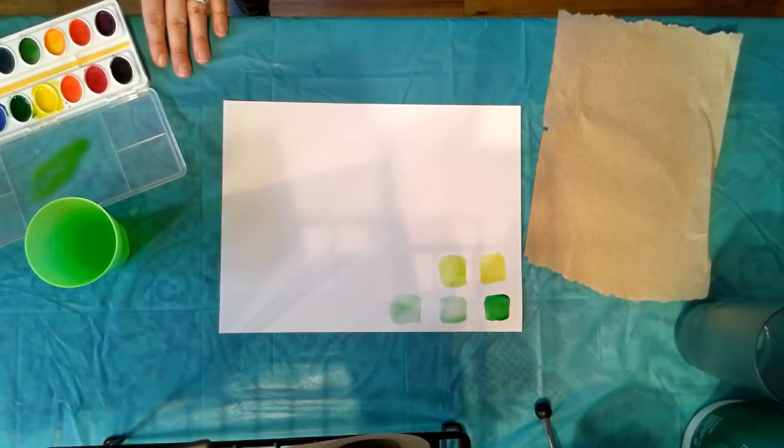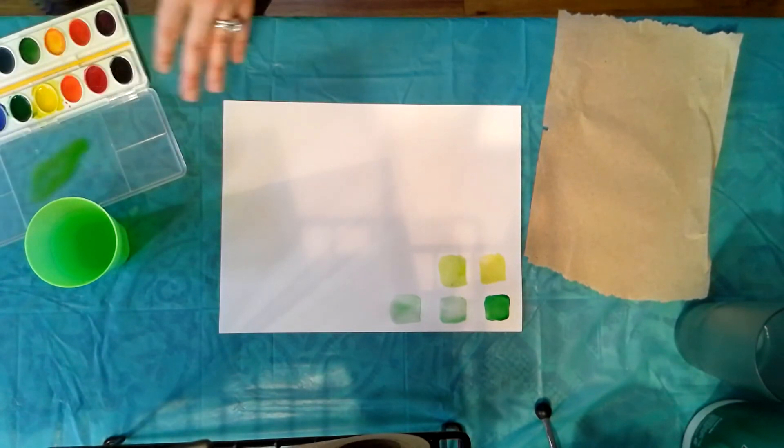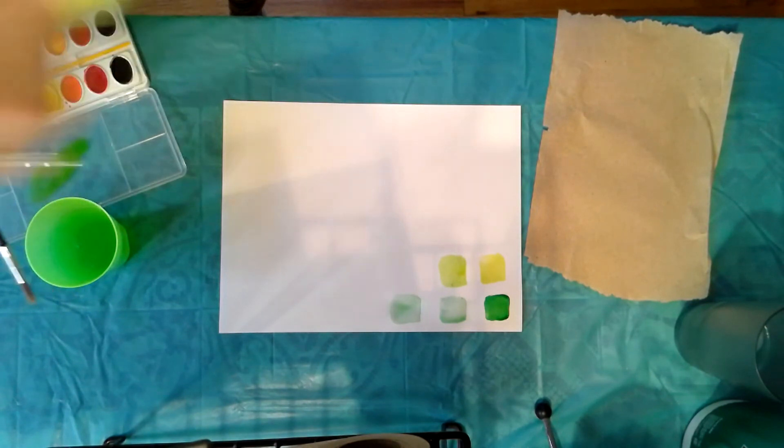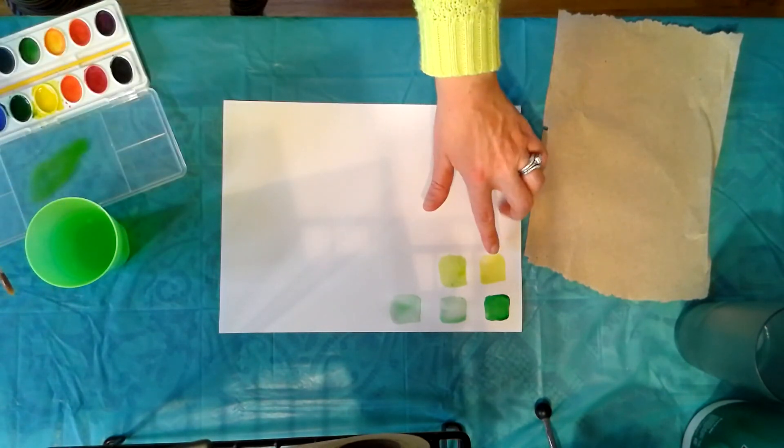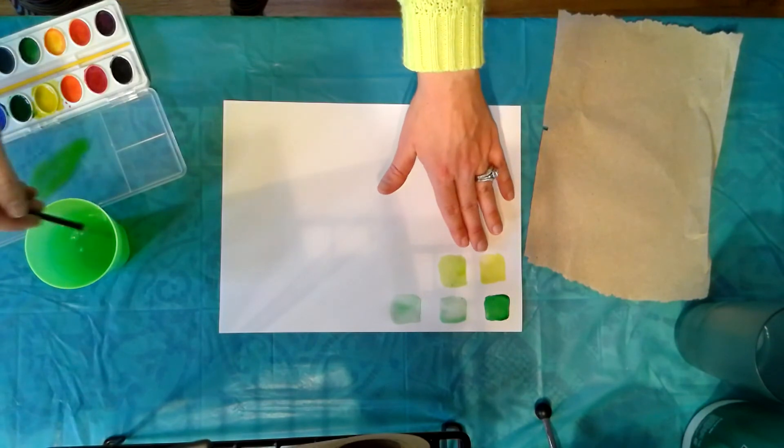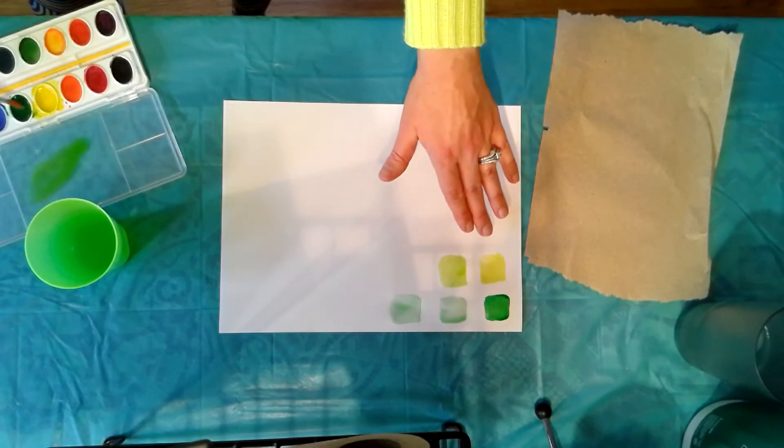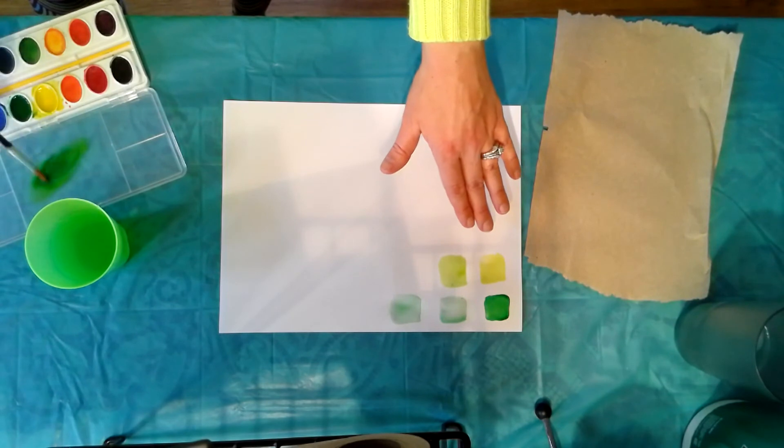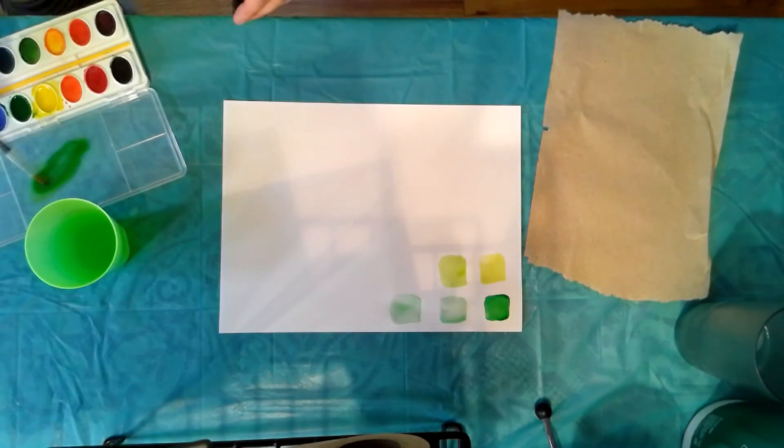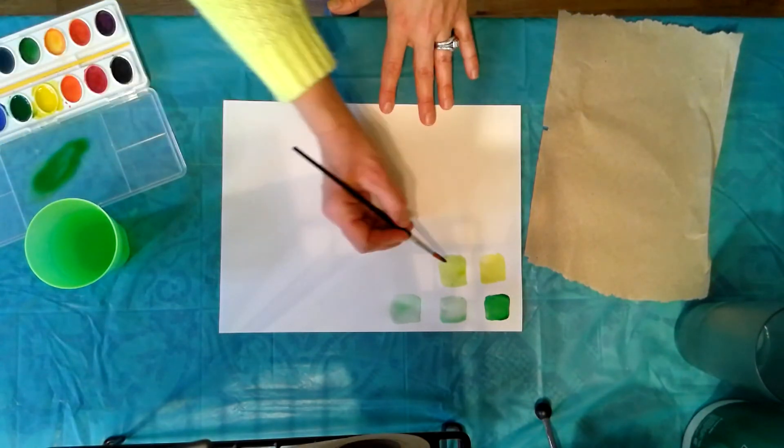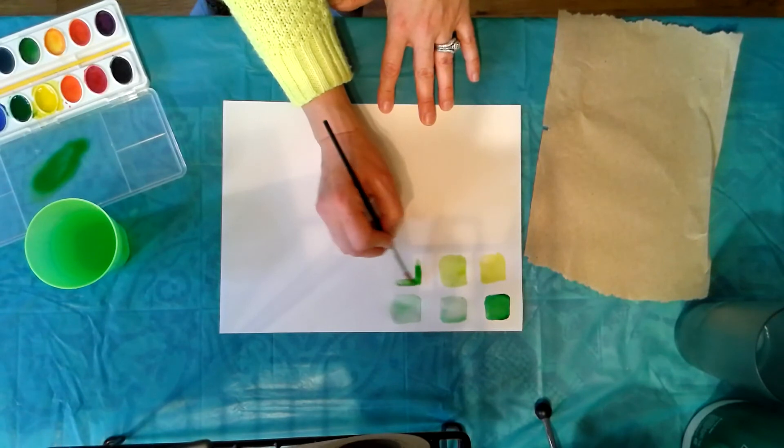So this is our fifth color. Now, like I just said up here, depending on how much water I use or how much paint I use, I can actually change both of these colors by making them lighter or darker by using more water to make them light. Or I can use more paint to make them dark. So now I've added more green to the same color.